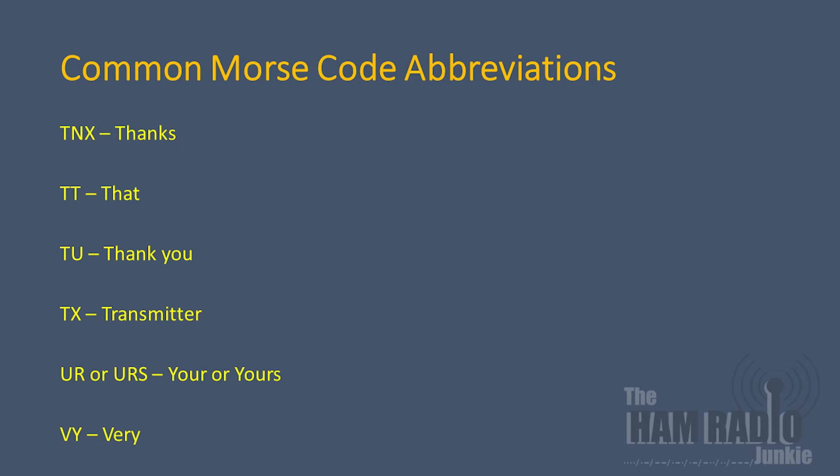These combinations of letters are fairly straightforward, and you probably use some of them if you send text messages on your phone. You will find combinations of abbreviations such as V-Y for 'very', G-D for 'good', and C-P-Y for 'copy' — as in 'very good copy'.